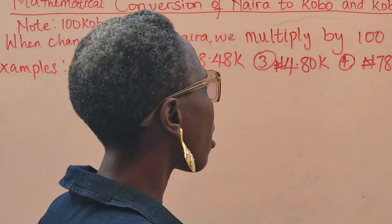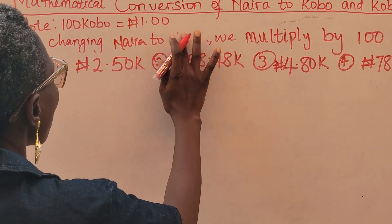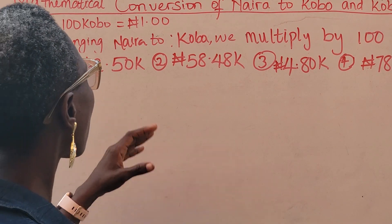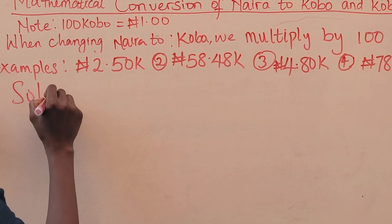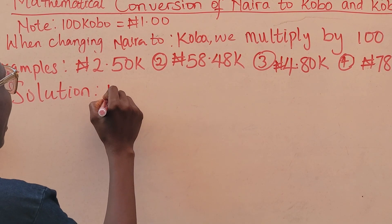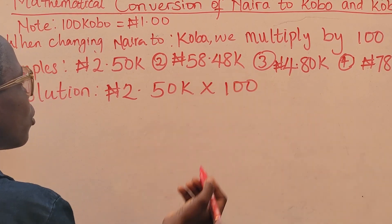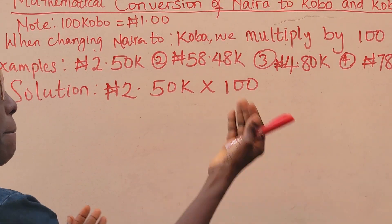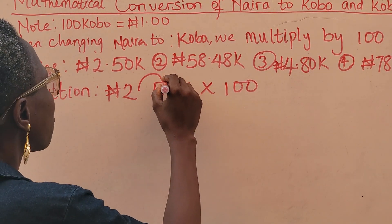Now we are going to change naira to kobo. When changing naira to kobo, we have to multiply by 100. When we were converting kobo to naira we divided; now we multiply. When we were dividing we moved the decimal point backward, but when we are multiplying we move the decimal point forward.